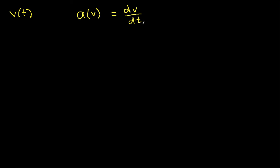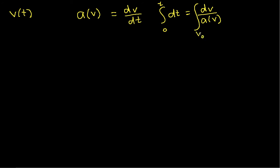What we'll do is get all of the time terms — in this case just the time differential — on one side, and all the velocity terms on the other side. We can now integrate this: we'll integrate between 0 and t for time, and between v₀ (the initial velocity at time 0) and some final velocity v. This expression gives us a relationship between time and velocity. When we integrate the time side, we get just t.